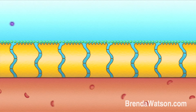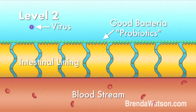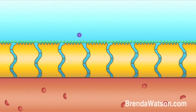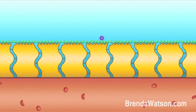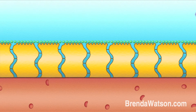On level two, the good bacteria form a barrier along your intestinal lining and prevent the virus from passing through the intestinal lining into your bloodstream.